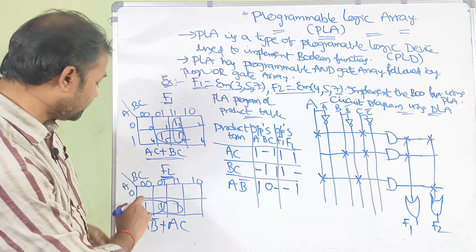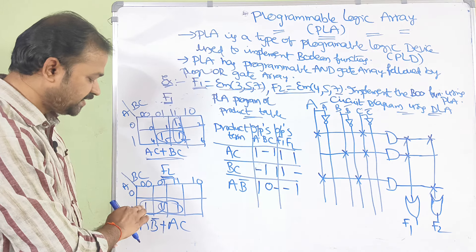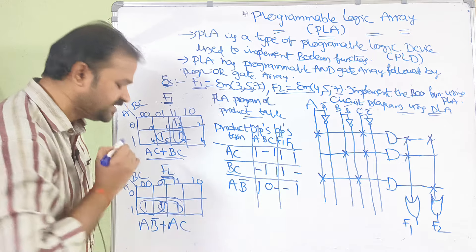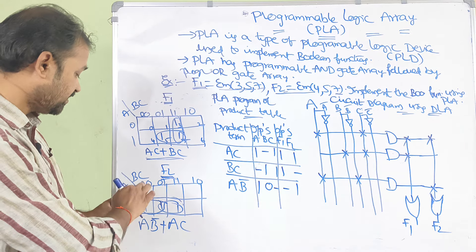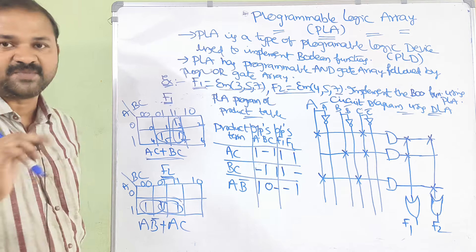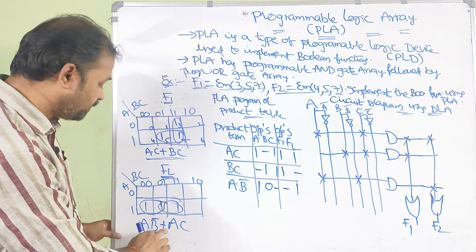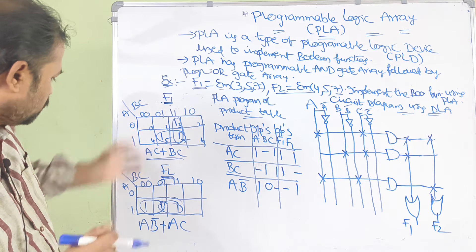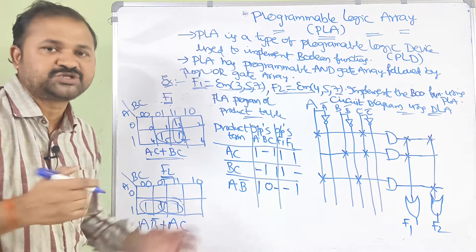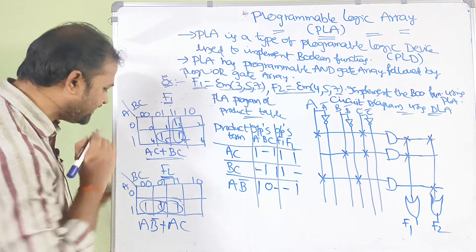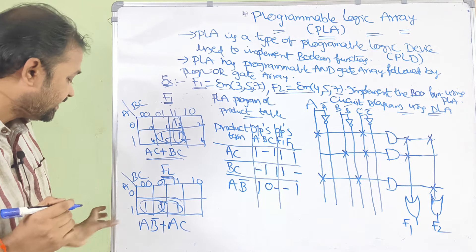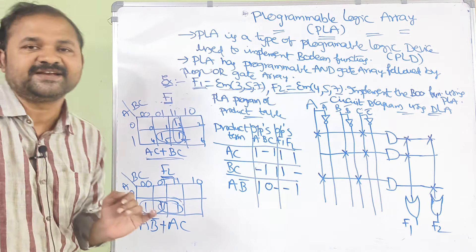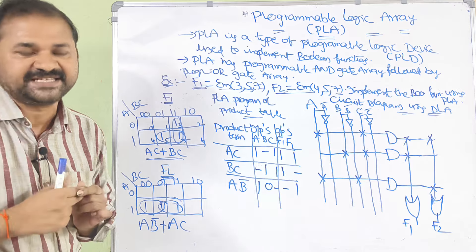For F2 the minterms are 4, 5, 7 — we place 1s in cells 4, 5, and 7. We can combine cells 4 and 5 as a group (A is common, B is 0, so AB̄), and cells 5 and 7 as a group (giving AC). So F2 = AB̄ + AC. Observing both functions, AC appears in both F1 and F2, so we can eliminate the duplicate and consider only one AC term.